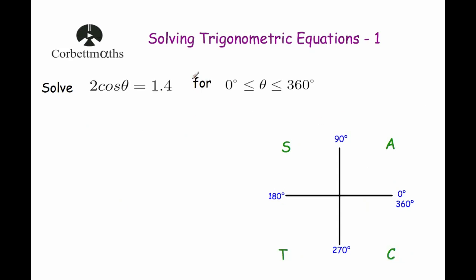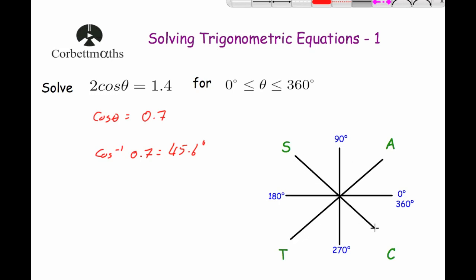Our next example: solve 2 cos θ = 1.4 for angles between 0° and 360°. This is slightly different because we've got the 2 in front, so we divide through by two first: cos θ = 0.7. Then we do the inverse cos of 0.7, which gives 45.6°. We mark 45.6° on the CAST diagram in all four quadrants.